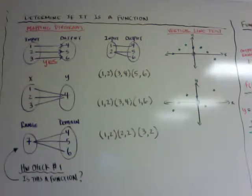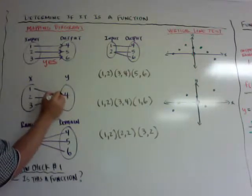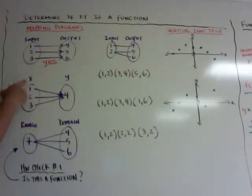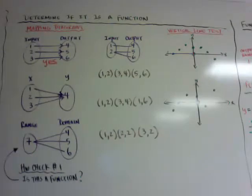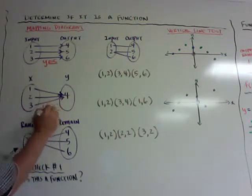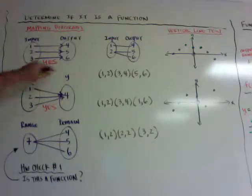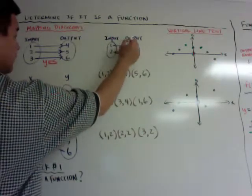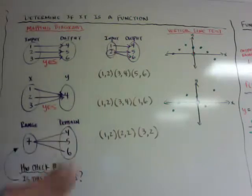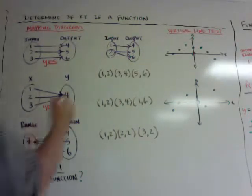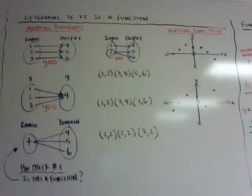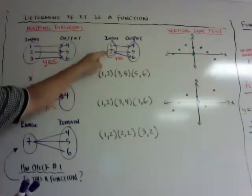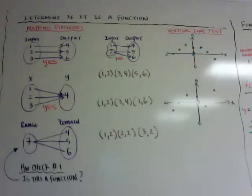This next one might seem tricky. If you put arrows again, each input or each x does have one y — it can be the same y. So as long as each input has only one arrow coming out, this one is also yes. However, if an input like '2' has two arrows going out to two different outputs, the answer is no — it is not a function, because two has two different outputs.